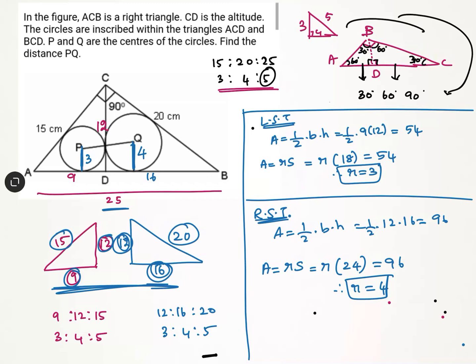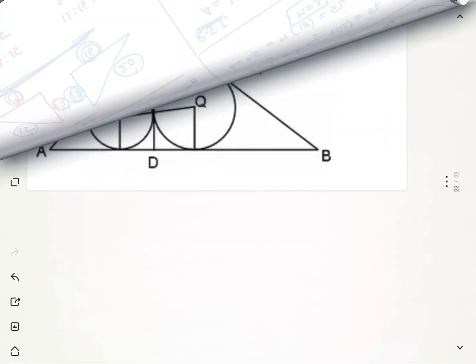Now, most of us will tend to say that the distance PQ is simply the left radius plus the right radius, giving 3 + 4 = 7. But that is not the right answer. PQ is not equal to the left side radius plus the right side radius. We will look at why PQ ≠ r_P + r_Q.